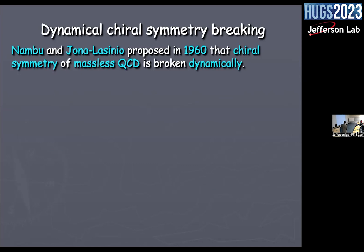Nambu and Jona-Lasinio proposed in 1960 that chiral symmetry of massless QCD is broken dynamically. There are two kinds of chiral symmetry breaking. One is that in the original Lagrangian you have masses which we can call bare masses; when you renormalize them, those masses are called the current quark masses.